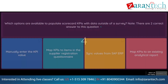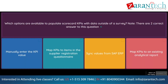Question. Which options are available to populate scorecard KPIs with data outside of a survey? Note, there are two correct answers. Option 1: Manually enter the KPI value. Option 2: Map KPIs to items in the supplier registration questionnaire. Option 3: Sync values from SAP ERP. Option 4: Map KPIs to an existing analytical report.